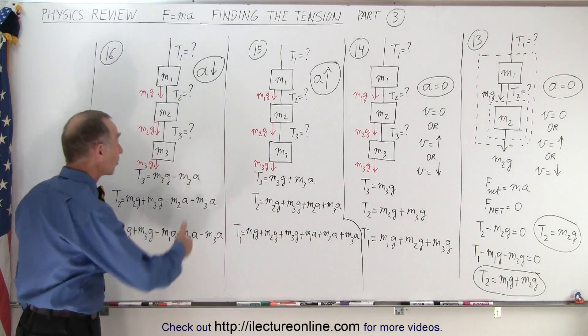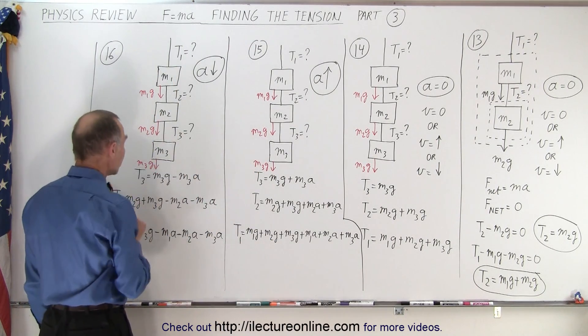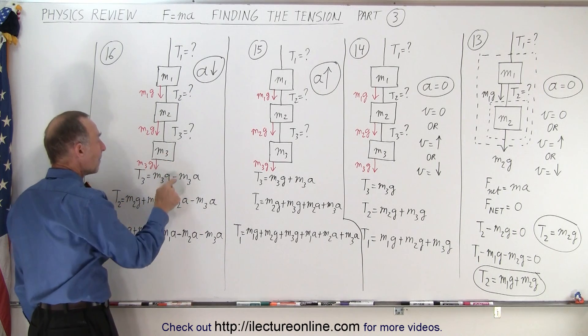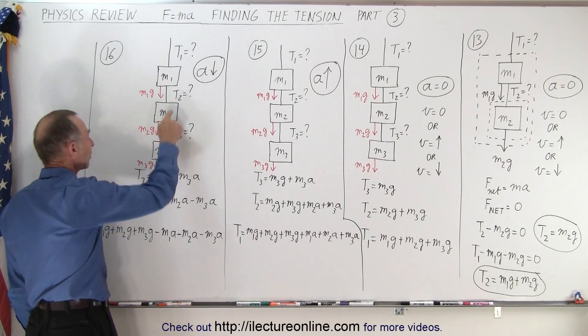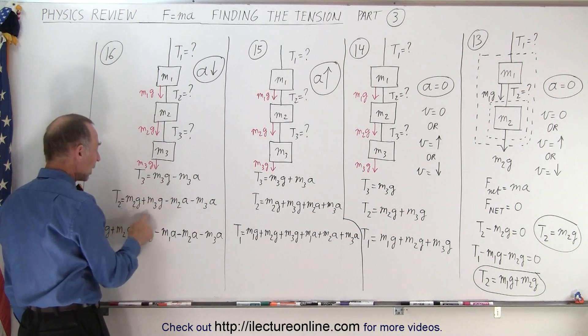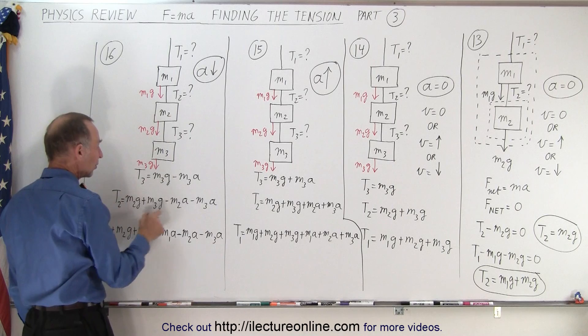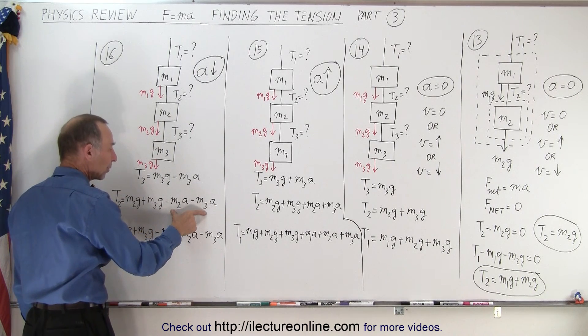But if the acceleration is downward, then you can see that T3 will be equal to the weight of the object minus the force to accelerate it. In the case of T2, it will be the sum of these two weights, the weight of this one plus the weight of this one, minus the force to accelerate both of them.